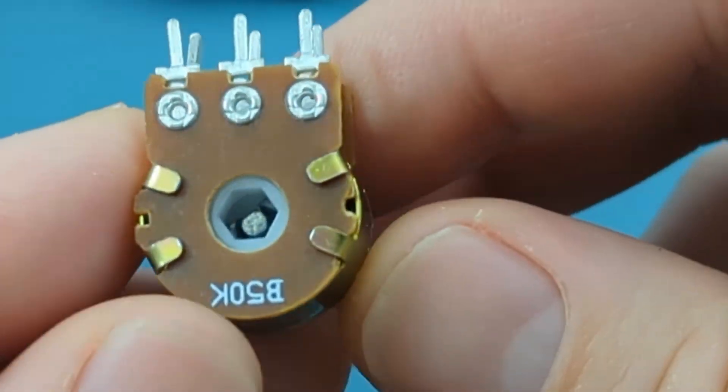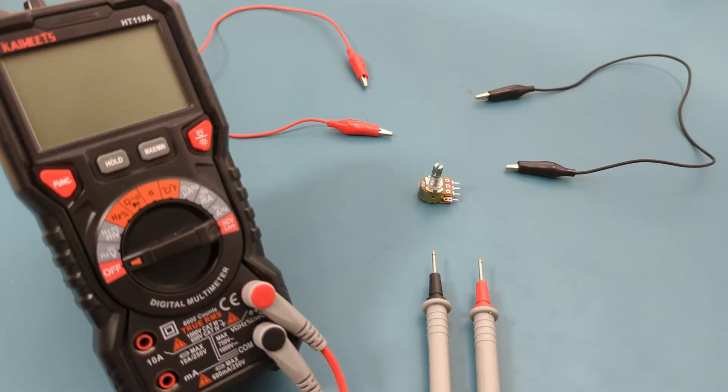Let's test this potentiometer. The first thing you want to do is turn the dial on the multimeter to the resistance setting.